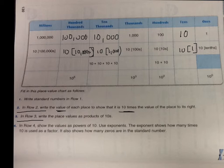In row 3, we're going to write the place values as products of 10, so multiplying them. Well, 10s, we know it's just 10 times 1. To make 100, it's 10 times 10. How many times do we multiply 10 to get 1,000?